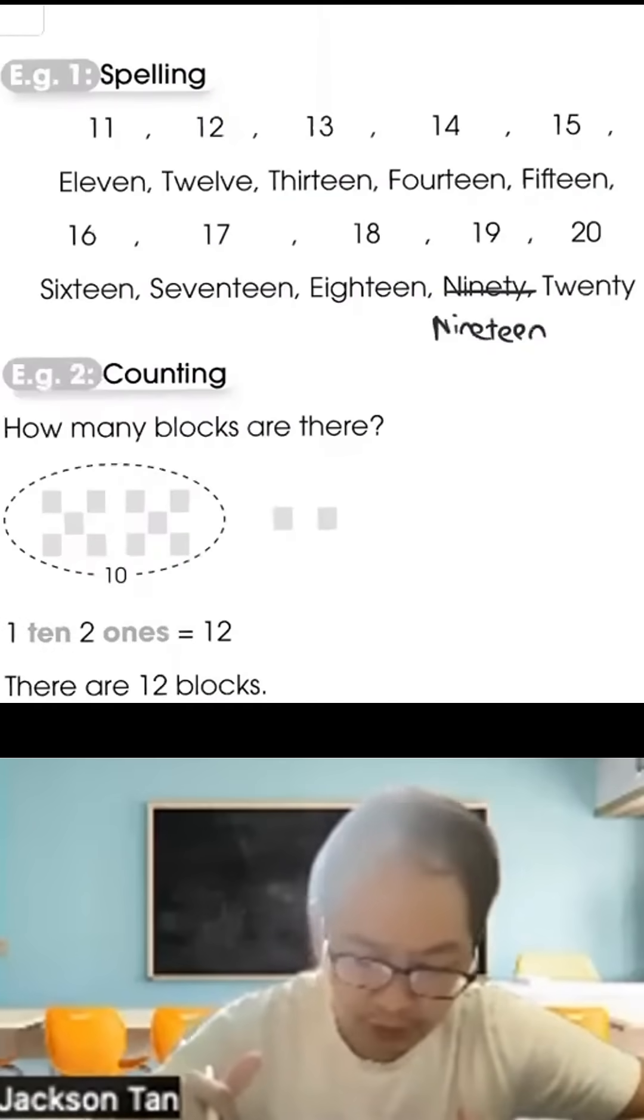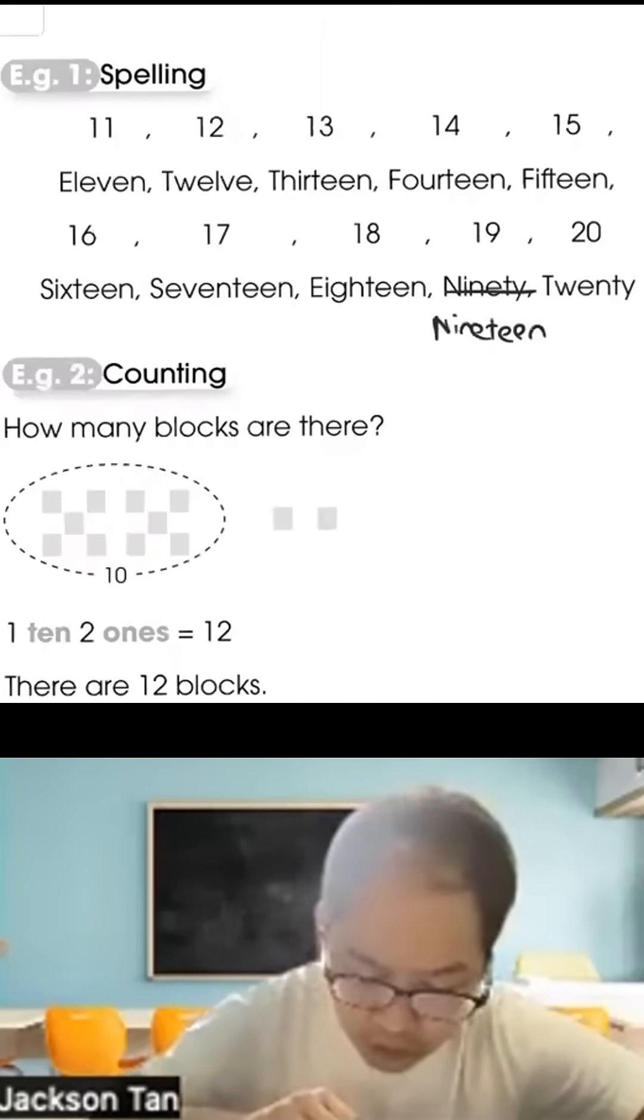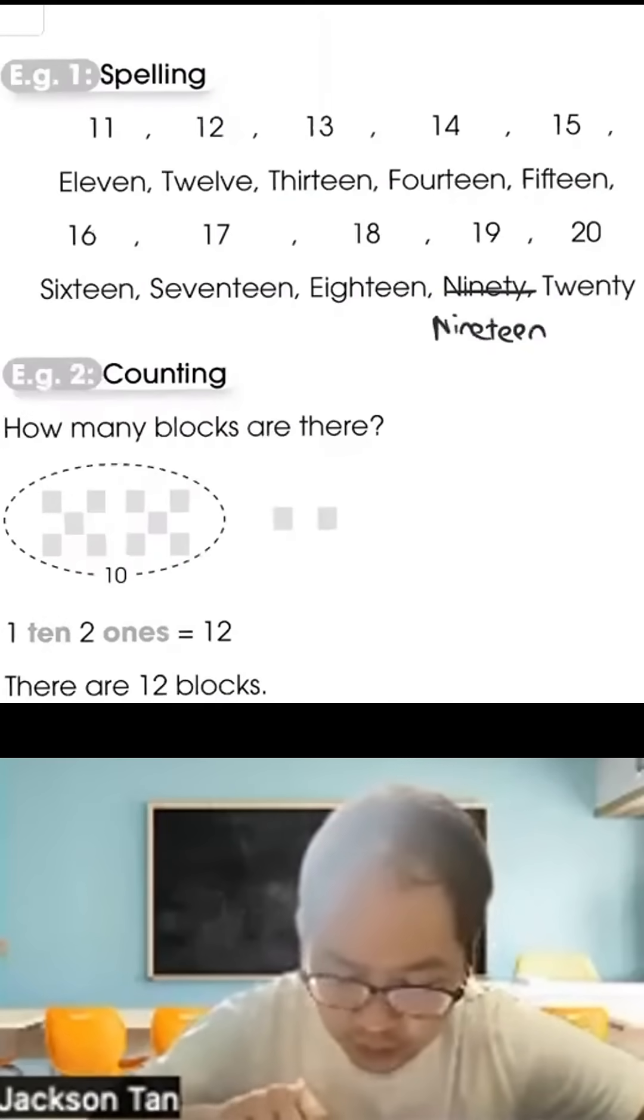Example 1: Learn the spelling from 10 to 20. This is 11, 12, 13, 14, 15, 16, 17, 18, 19, 20.